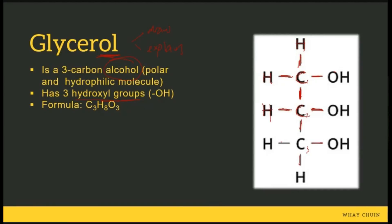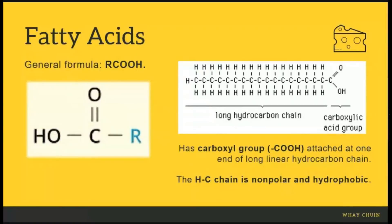That gives us the glycerol structure with chemical formula C₃H₈O₃. Now looking at fatty acid: the general formula is RCOOH because it is an acid. Being an acid, it must have a functional group called the carboxyl group — C double bond O, and OH. This gives four bonds on the carboxyl carbon: one to double-bond O, one to OH, and the fourth carries the R group. Different fatty acids have different R groups; the R group represents a long hydrocarbon chain consisting of only carbon and hydrogen.